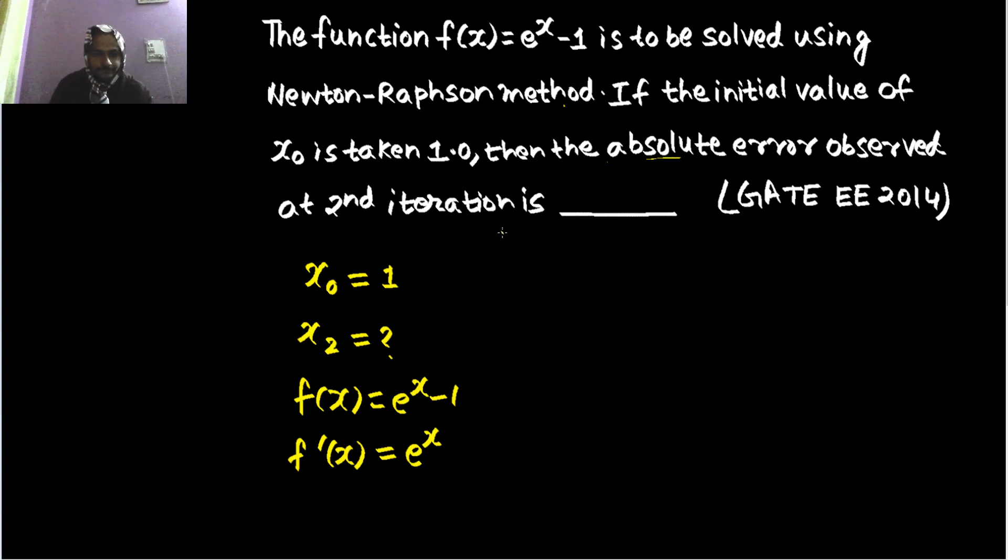So let's take the first iteration, which will be x1 equals x0, which is 1, minus value of function at x0. So value of function at 1. That will be e^1 minus 1. Let's use the calculator. So e^1 minus 1.